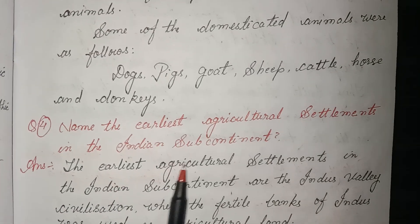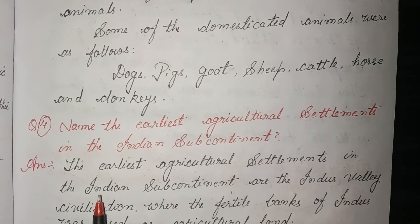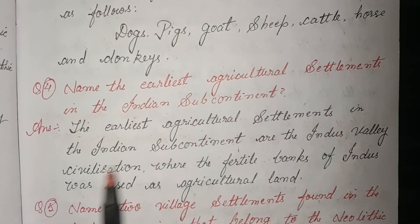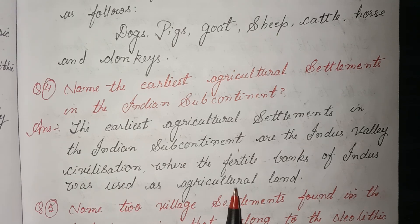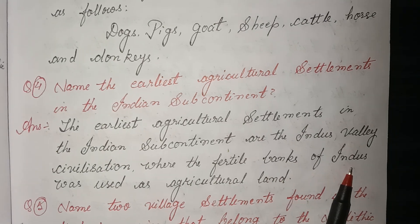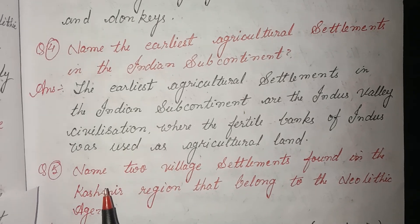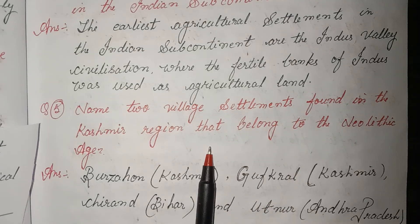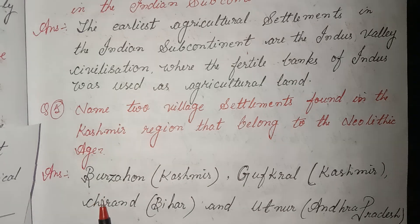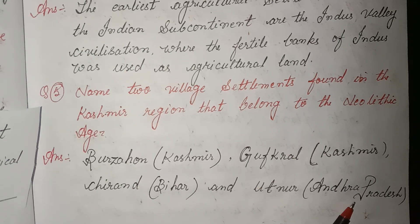Question four: Name the earliest agricultural settlements in the Indian subcontinent. Answer: The earliest agricultural settlements in the Indian subcontinent are the Indus Valley Civilization, where the fertile banks of the Indus River were used as agricultural land. Question five: Name two village settlements found in the Kashmir region that belong to the Neolithic Age. Answer: Burzahom, Kashmir; Gufkral, Kashmir; Chirand, Bihar; and Utnoor, Andhra Pradesh.